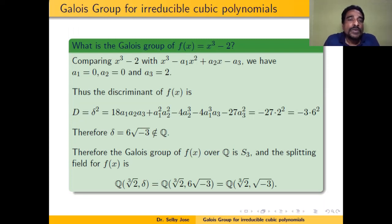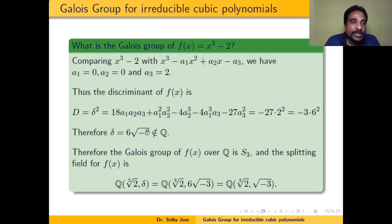Example 1: What is the Galois group of f(x) = x³ - 2? Comparing with x³ - a1x² + a2x - a3, we have a1 = 0, a2 = 0, a3 = 2. The discriminant is D = Δ² = 18a1a2a3 + a1²a2² - 4a2³ - 4a1³a3 - 27a3². Since a1 = a2 = 0, only the last term survives: D = -27a3² = -27·4 = -108 = -3·6². Therefore Δ = 6√(-3), which is not in Q. Therefore, the Galois group of f(x) is S3.